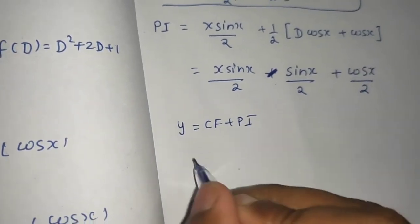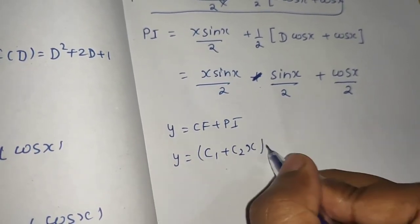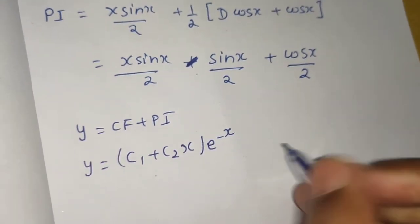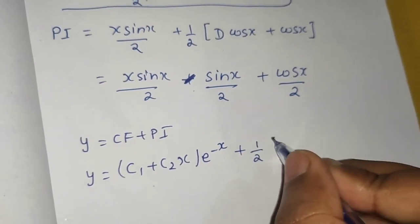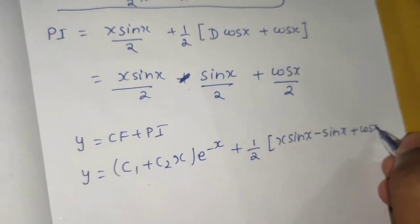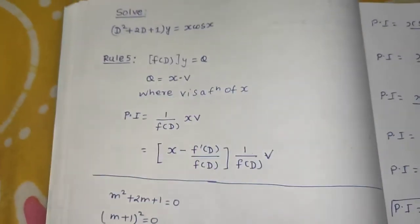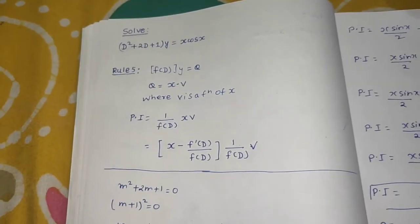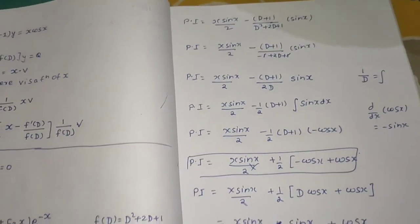The general solution is y = CF + PI. The complementary function was (c₁ + c₂x)·e^(−x), and the particular integral is (1/2)(x·sin x − sin x + cos x). This gives the final answer. If you know Rule 5 this is straightforward — Rule 1 through 5 are discussed in a separate video, do watch that. Rule 6 is coming in the next video.